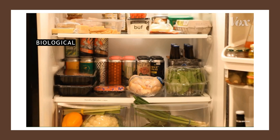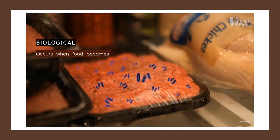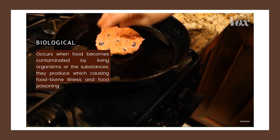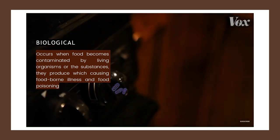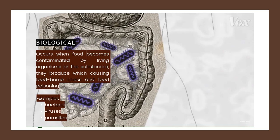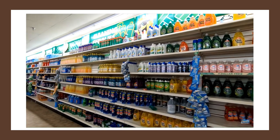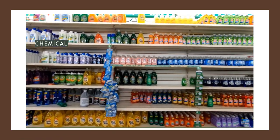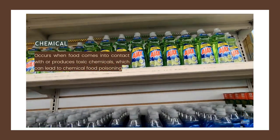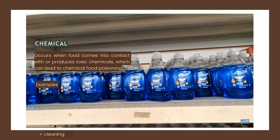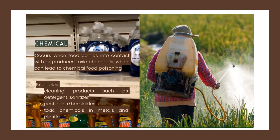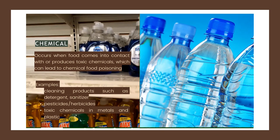For biological contaminants, it occurs when food becomes contaminated by living organisms or the substances they produce, causing foodborne illness and food poisoning. There are several types of microorganisms that can cause foodborne illness, such as bacteria, viruses, and parasites. For chemical contaminants, it occurs when food comes into contact with or produces toxic chemicals, which can lead to chemical food poisoning. Common examples include cleaning products such as nitrogen-based cleaners and sanitizers, pesticides or herbicides, and toxic chemicals in metals and plastics.